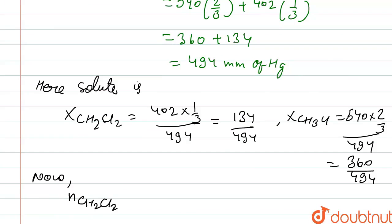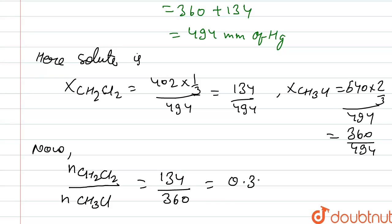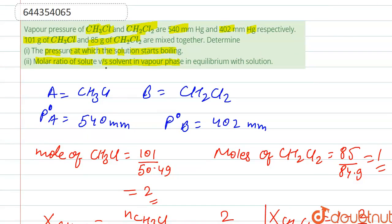The ratio of CH₂Cl₂ to CH₃Cl is 134 upon 360. After solving, we get 0.372. So this is the molar ratio of solute versus solvent in the vapor phase.